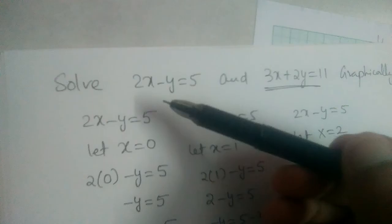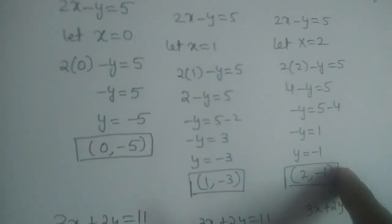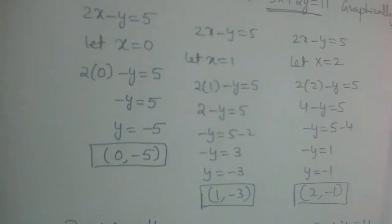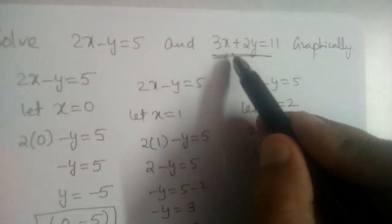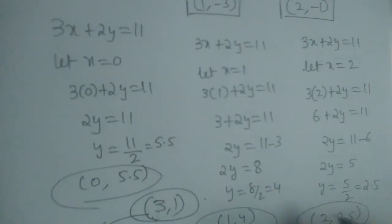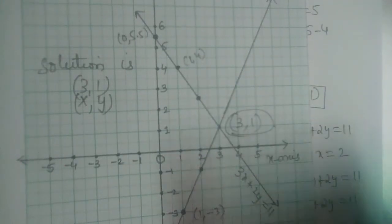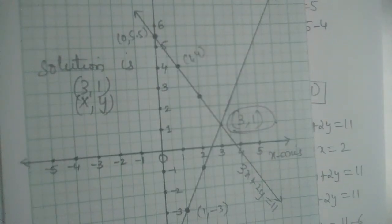This is how we solve graphically when two linear equations in two variables are given. Substitute different values of x or y to get three points, plot the graph for each equation, and the point where the two lines intersect is our solution.